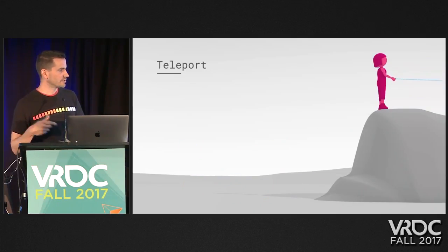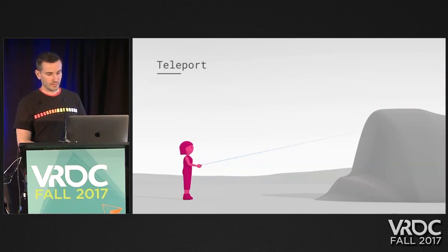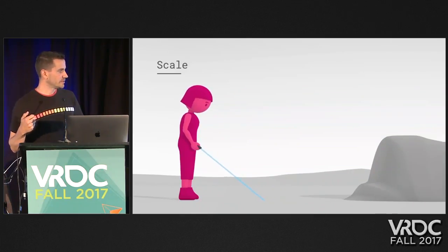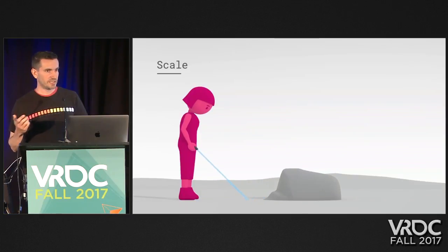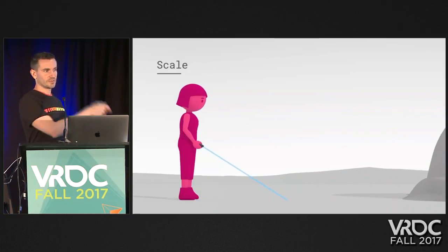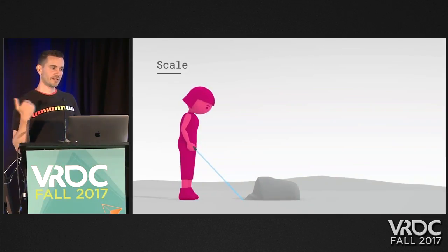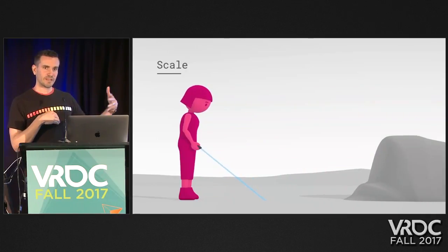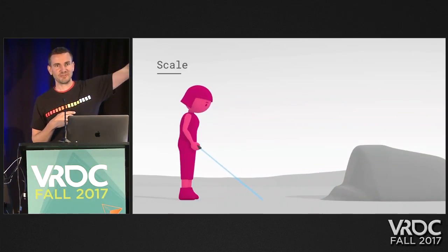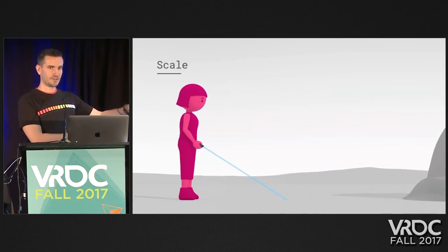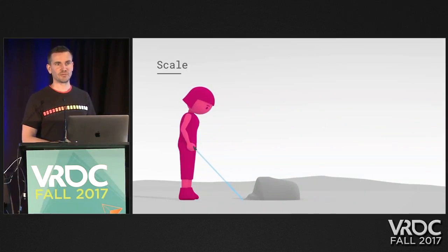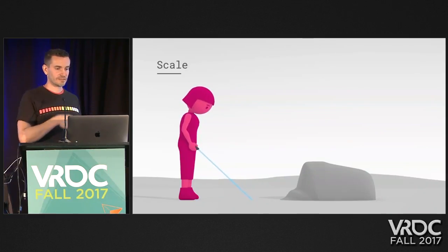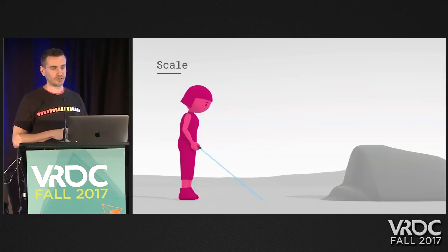Users also wanted a higher or lower view, so we gave them the ability to scale themselves by clicking up and down on the touchpad — they could grow and shrink. But a problem emerged: they would teleport toward a building or mountain, then scale themselves down to human scale, and as they did, that building would drift further and further away. You'd end up with this clunky teleport, scale, scale, scale, teleport, scale, scale, scale — just to get at human scale in front of a door or at the base of a mountain.